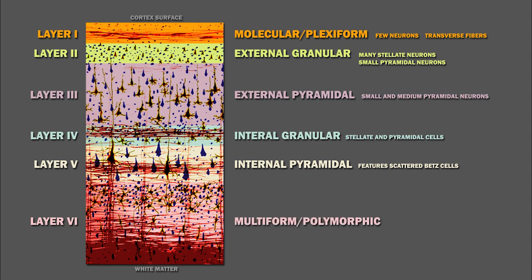Layer 6 is called the multiform, or polymorphic layer. This is the layer where cells of multiple forms merge with the white matter. The neurons in this layer differ in the shape and distribution of their axons and dendrites, as well as their physiological properties. Some of the cell types include pyramidal neurons and stellate neurons, as well as bipolar, or fusiform, neurons.